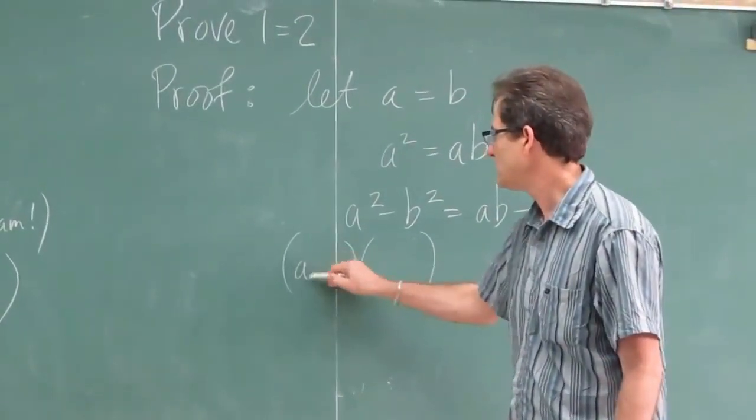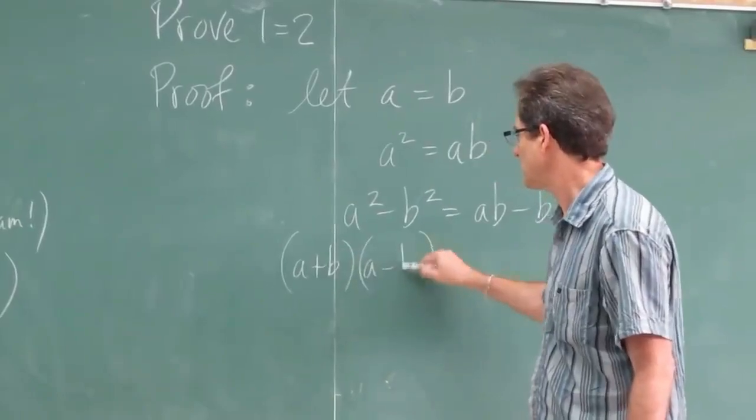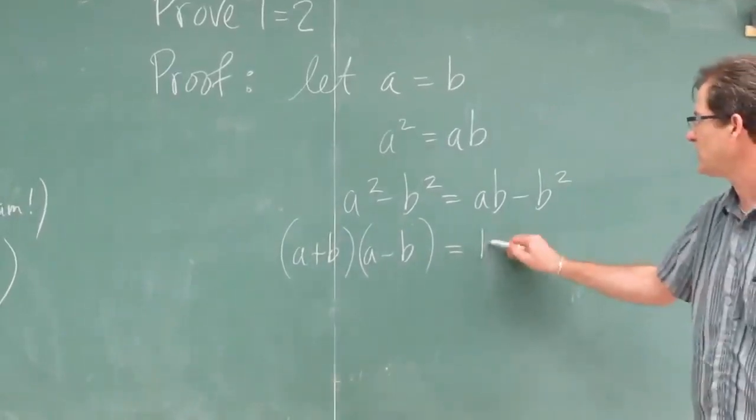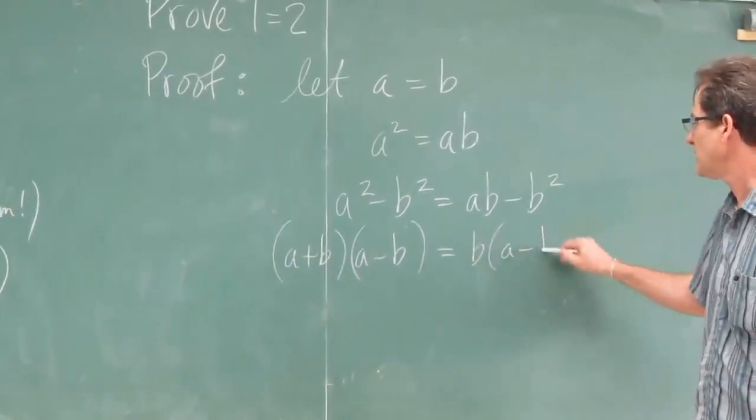So what do you get? A plus B times A minus B. On the right hand side you can factor by factoring out B. And you get A minus B.